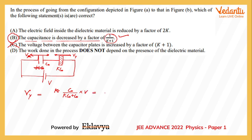The new value of electric field in this region of space will be VY upon D, so it will become V by D upon K plus 1. It will become by K plus 1 of the initial value. It will not be reduced by a factor of 2K; rather, it will be reduced by a factor of K plus 1.